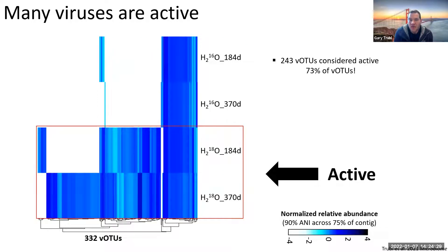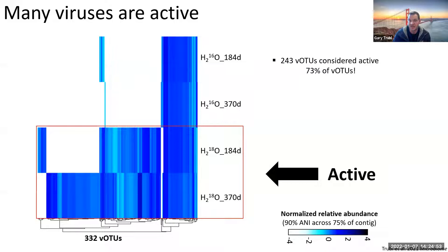I'll do some quick highlights, focusing on the viruses. In this heat map, on the x-axis we found 332 viral populations. On the y-axis I have four different treatments: regular water for half a year, enriched water for half a year, and both for a full year. Looking at just the bottom part - the active ones - we found that 243 of our 342 populations were active over the winter. This is incredible - a large amount of viruses active in winter.